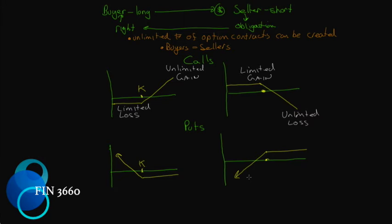What we should see on the put buyer's chart is a limited loss - just the premium that was paid for the put - but a theoretically unlimited gain. I say theoretically because the stock price can only fall to zero. The put seller, on the other hand, gets a limited gain but an unlimited loss - and again, theoretically it's an unlimited loss, it can only go to zero.